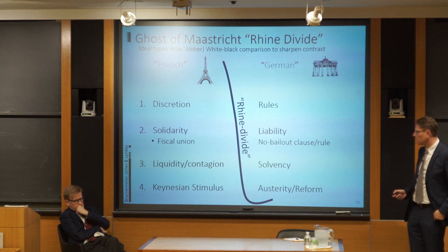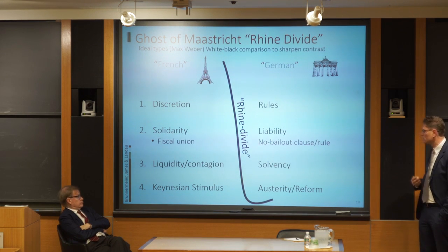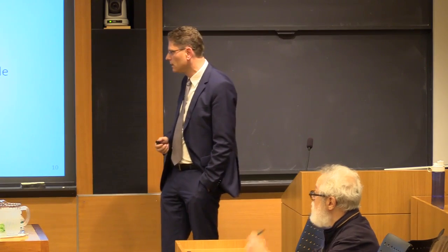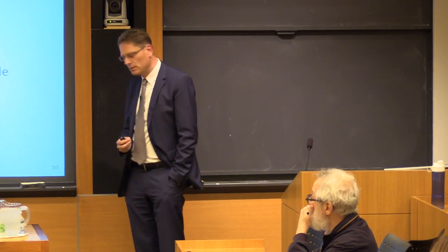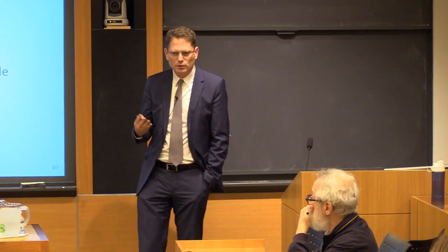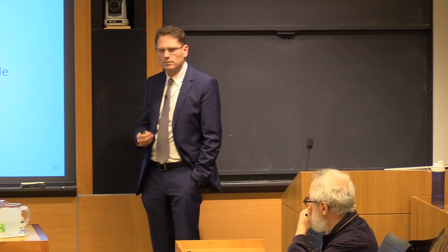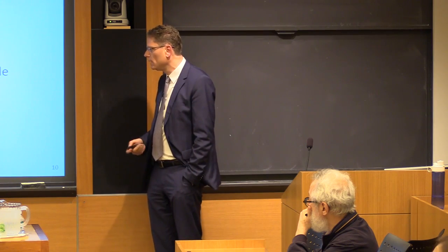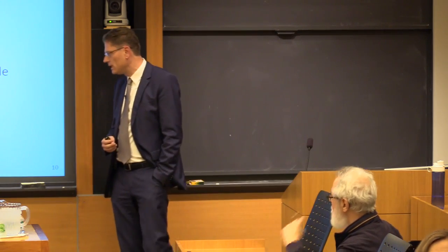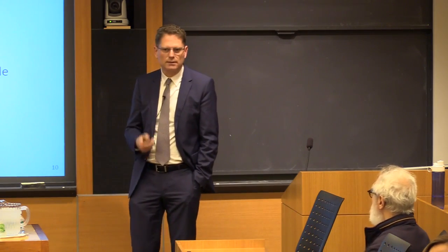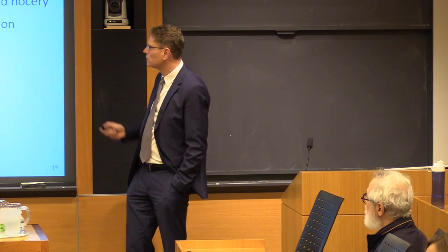The first dimension, as Harold pointed out, is discretion versus rules. The second is solidarity — French solidarity — versus the German liability principle. The third is liquidity versus solvency: from a French perspective any financial problem is always a liquidity problem, while from a German perspective it's a solvency problem. And finally, everybody reads about Keynesian stimulus versus austerity and reform measures. Let me move to discretion versus rules.